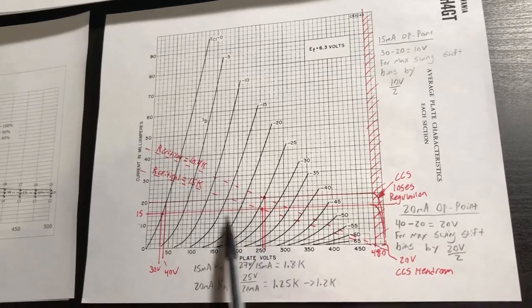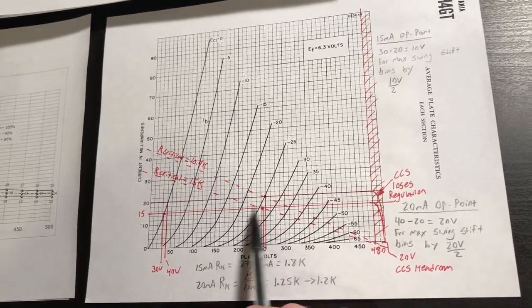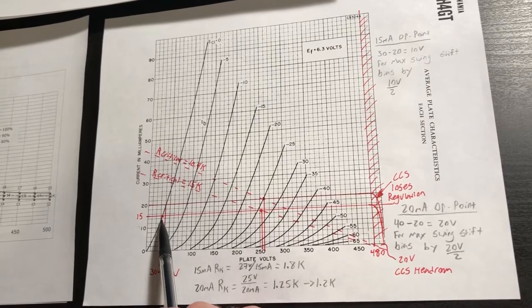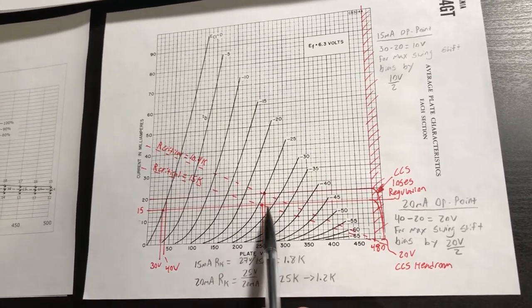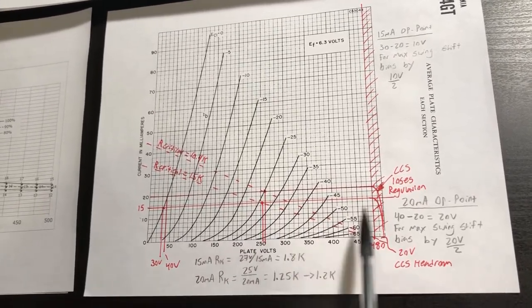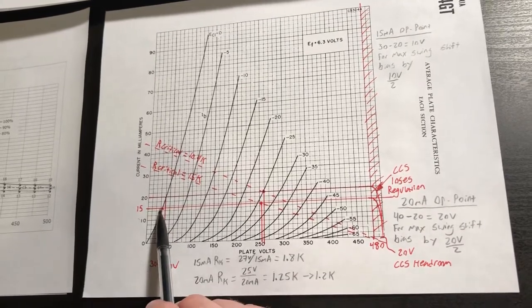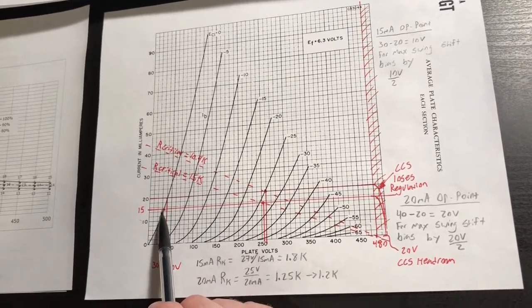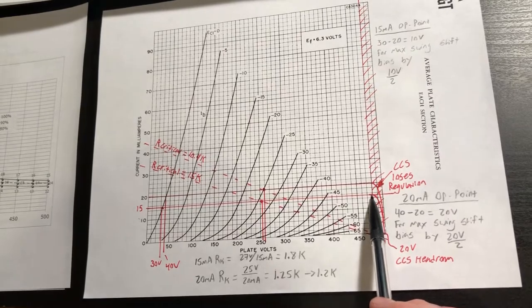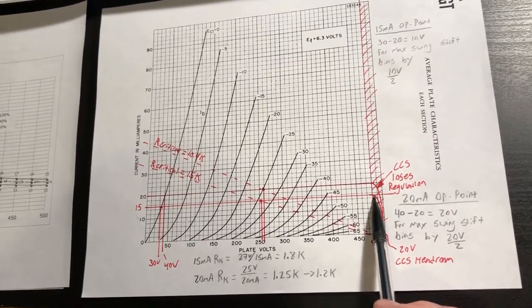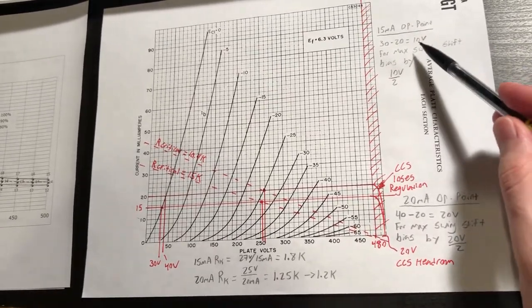So for this lower 15 milliamp curve, what I did is I just calculated the offset we need to shift the bias in order to maximize between this bound here, our zero signal grid curve, and our headroom curve we need for the constant current source. And that math is just shown up here.